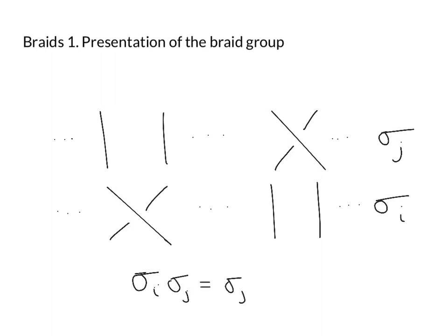In other words, sigma_i sigma_j equals sigma_j sigma_i. And when does this happen? Well, this happens with this condition on the crossings that I mentioned. So what we need is for i and j to be sufficiently far apart. In fact, we need |i - j| to be at least two.